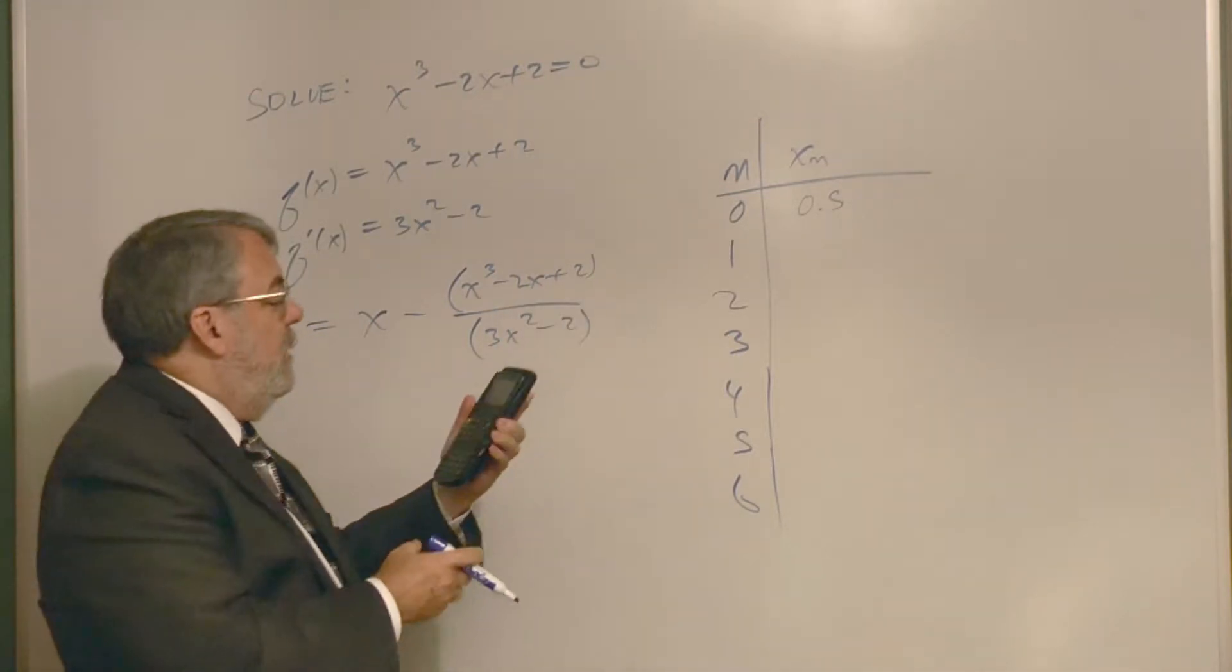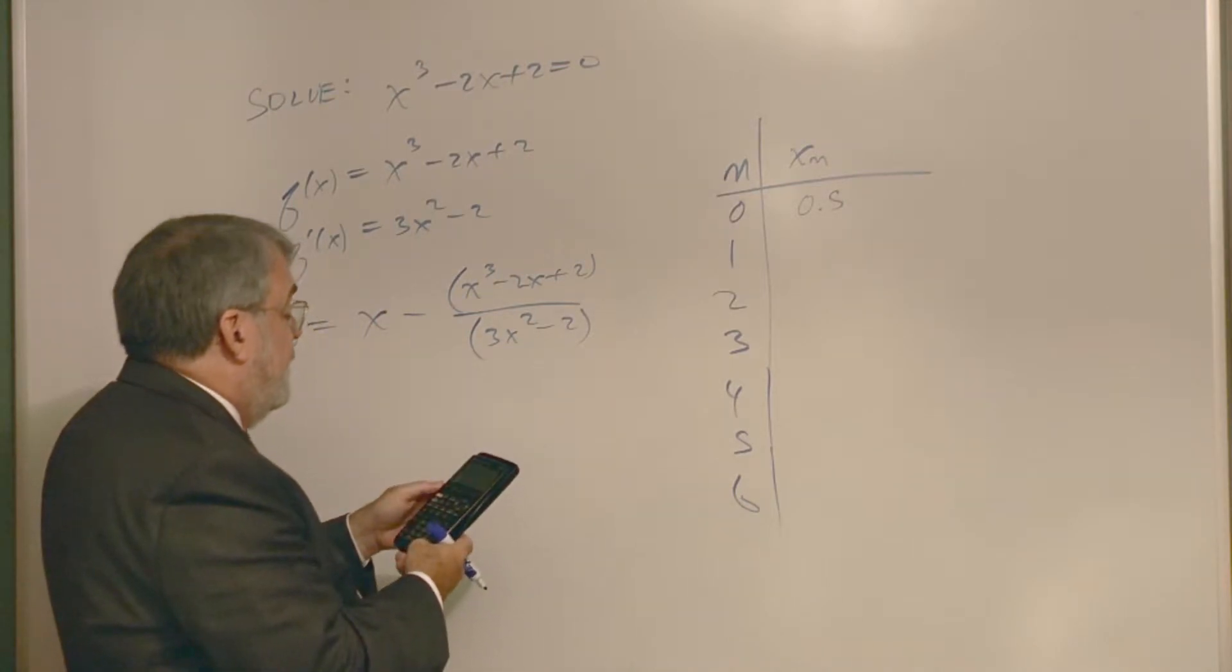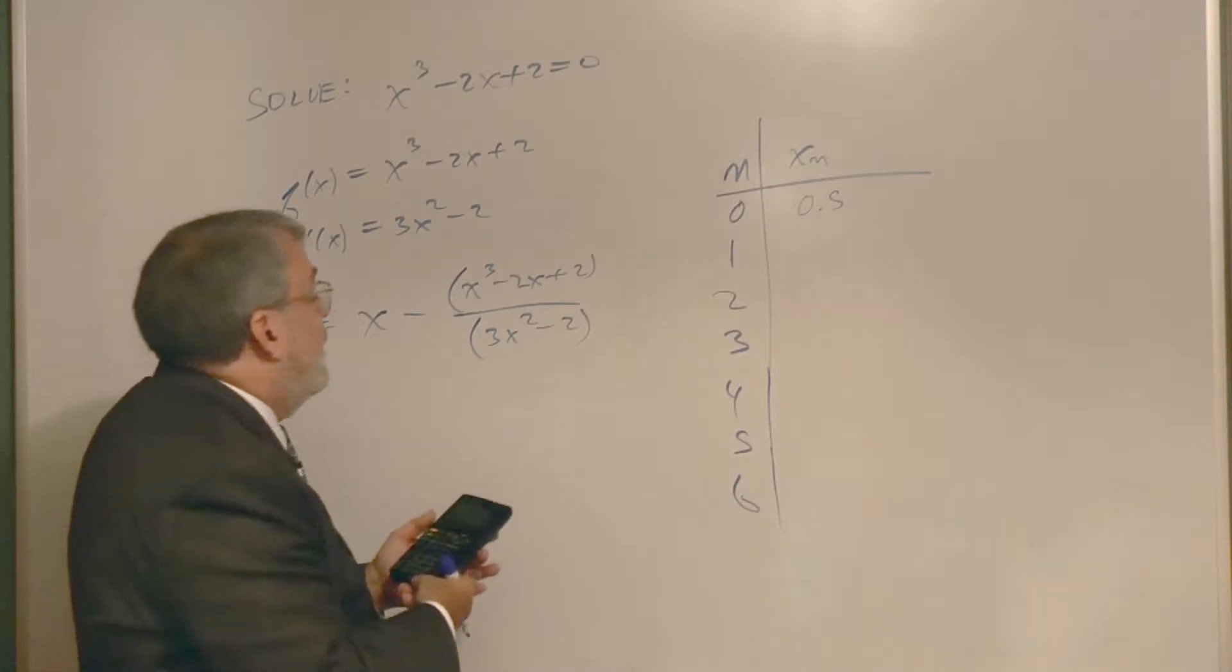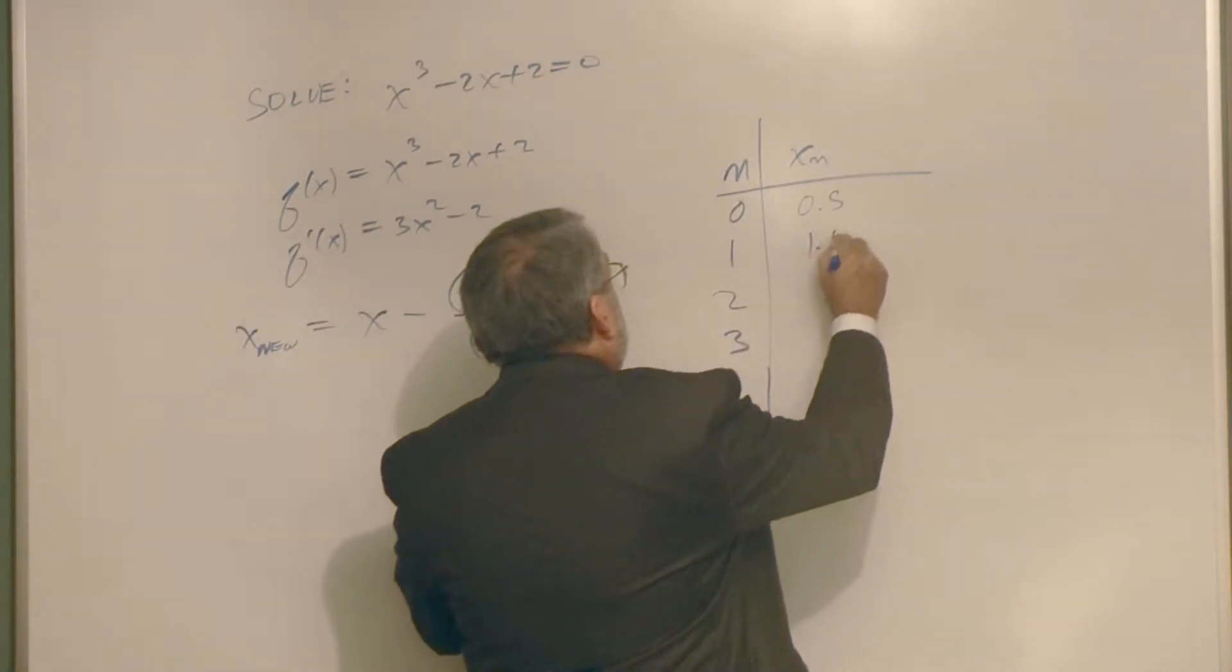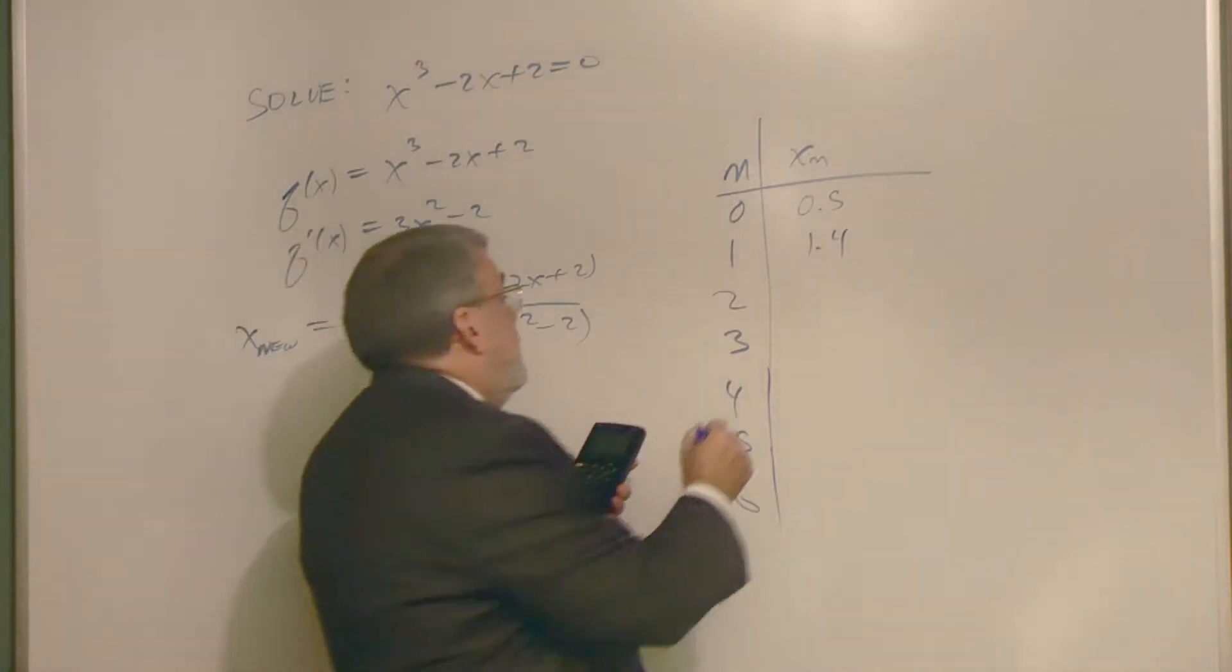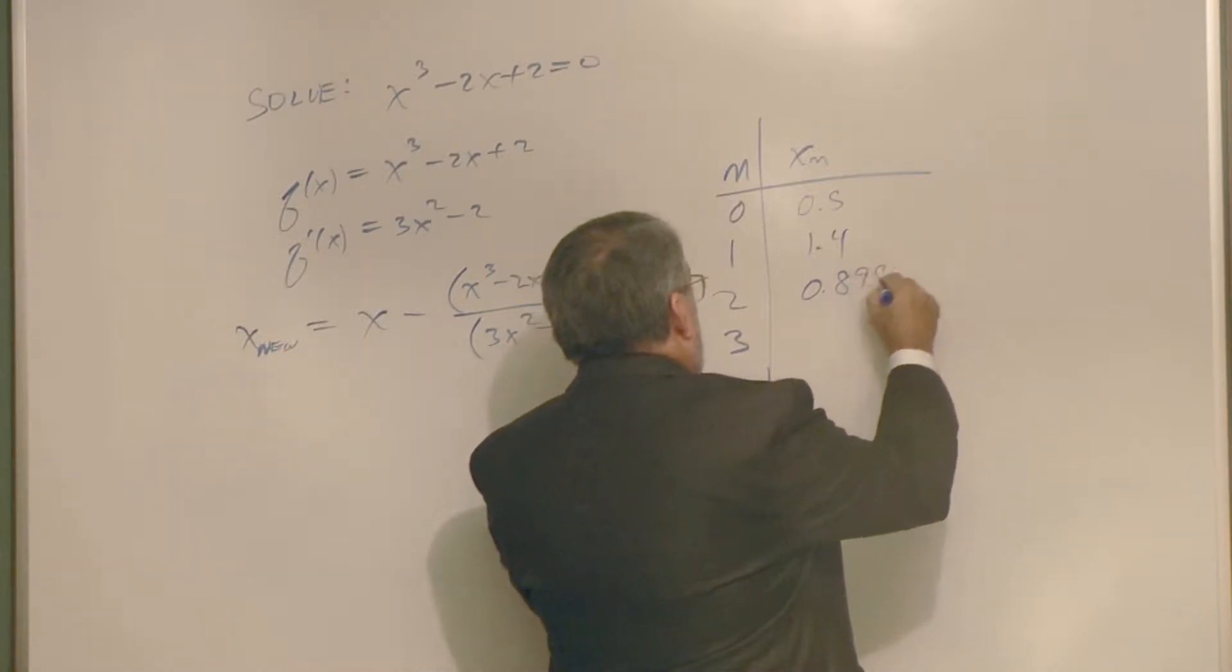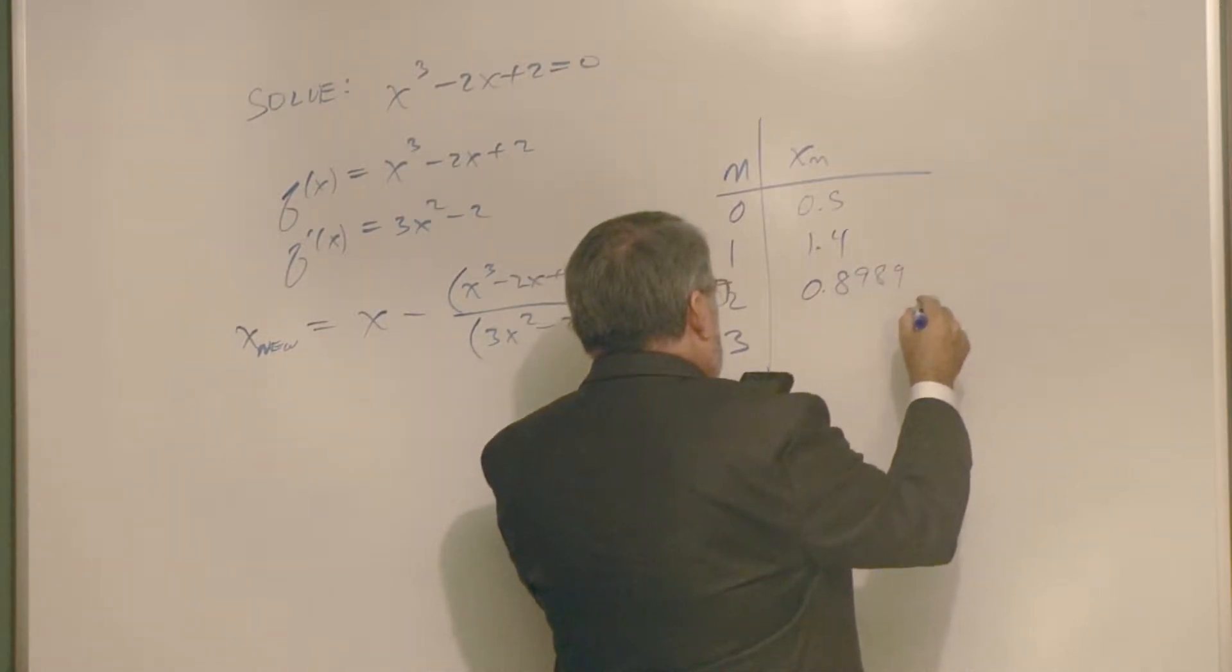Does it look right to you? Oh I forgot to hit, thank you, I forgot to hit store x. All right store x. So I get 1.4, how about that. And then when I do it again I get 0.89896907216.